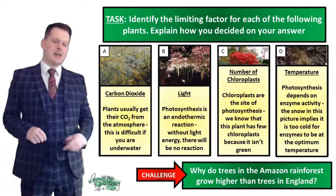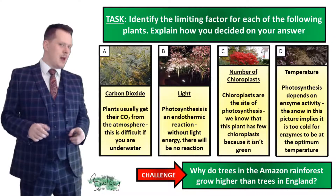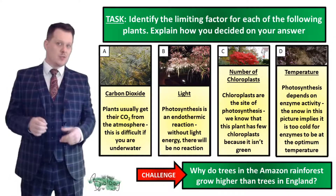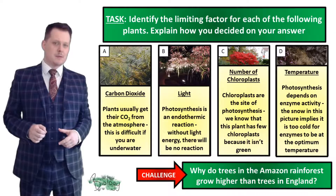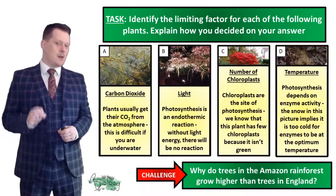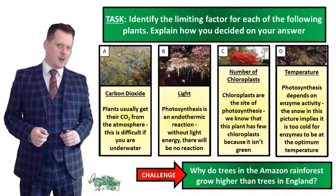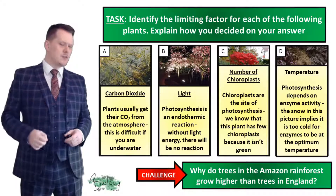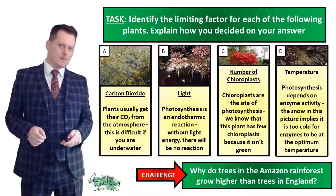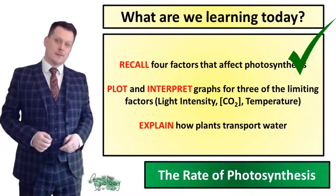Why is it that trees in the Amazon rainforest grow higher than trees in England? The Amazon rainforest has a temperature which is better suited for the enzymes in plants, they get a lot more sunlight, and more sunlight means more photosynthesis can occur. There is also an abundance of water for all the plants to grow. So now we can recall some factors which affect photosynthesis.